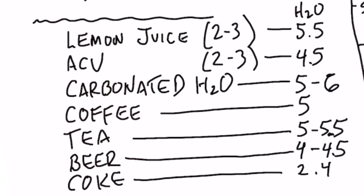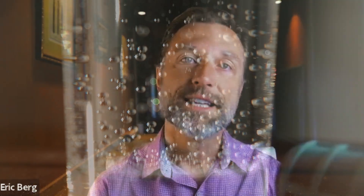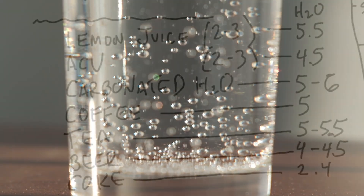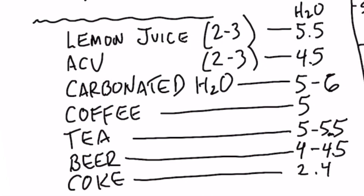Apple cider vinegar is also very acidic, between 2 and 3, because of the acetic acid. You're not going to drink that straight — you're going to dilute it with water, and the pH is going to come up to about 4.5 to 5, depending on whether you're using a tablespoon or a teaspoon. Carbonated waters have carbonic acid and can fluctuate between 5 to 5.5, maybe even 6.